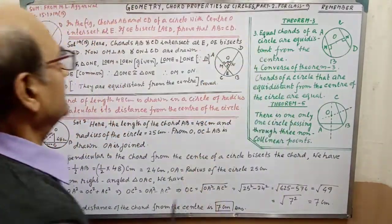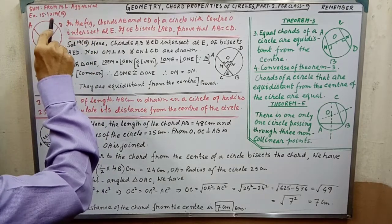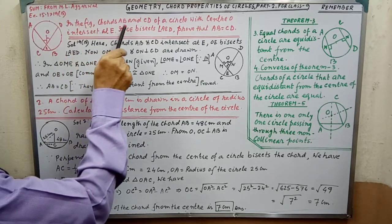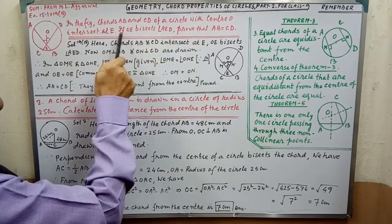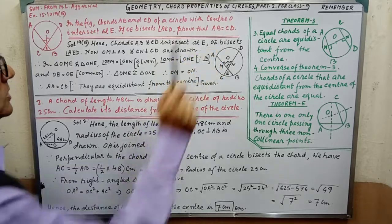On this, the sum is given. From M.L. Agarwal, Exercise 15.1, Problem 19B. The sum is in figure chords AB and CD. This is the sum you will get in the book. We have to prove AB equal to CD.